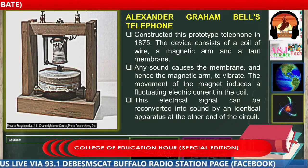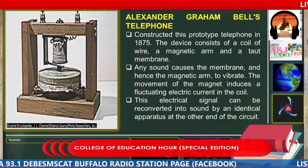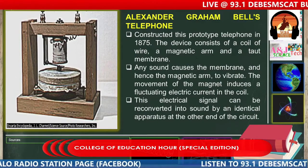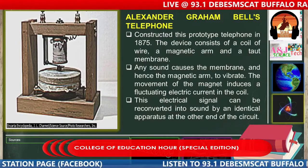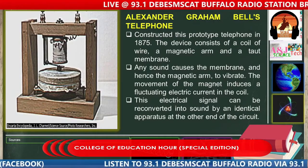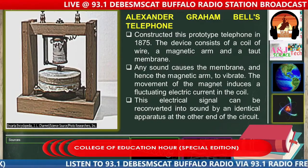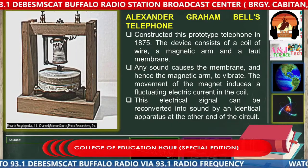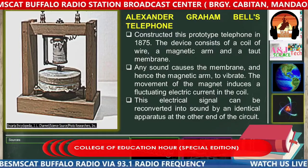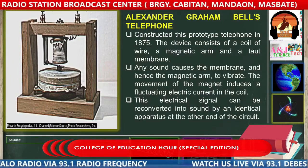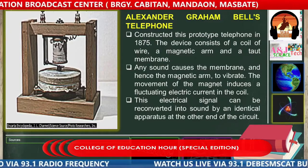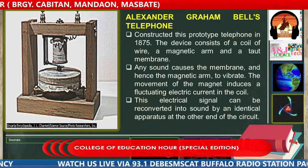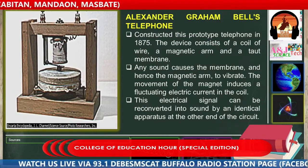You will notice that the prototype of Alexander Graham Bell's telephone is very complex compared to the telephone today. Any sound causes the membrane and hence the magnetic arm to vibrate, because when a certain matter vibrates, there is the production of sounds. The movement of the magnet induces a fluctuating electric current in the coil, and these electrical signals can be reconverted into sound by an identical apparatus at the other end of the circuit.